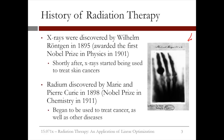This image shows an X-ray of Röntgen's wife's hand. You can see the bones in her hand, as well as her wedding ring on her finger. A few years later, in 1898, radium was discovered by Marie and Pierre Curie. They won the Nobel Prize for this discovery in 1911, and radium started being used to treat cancer as well as other diseases.